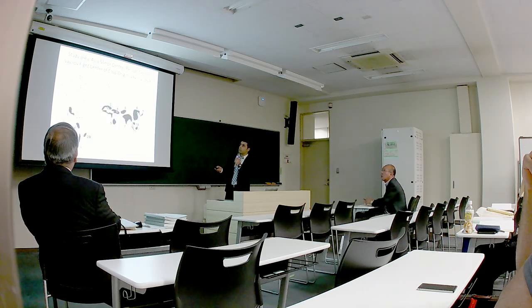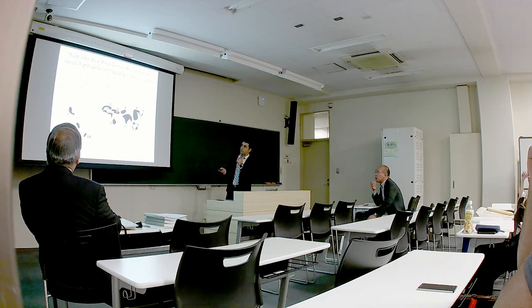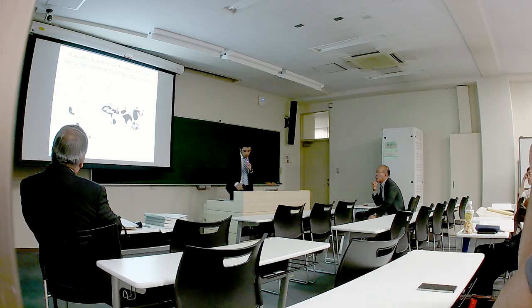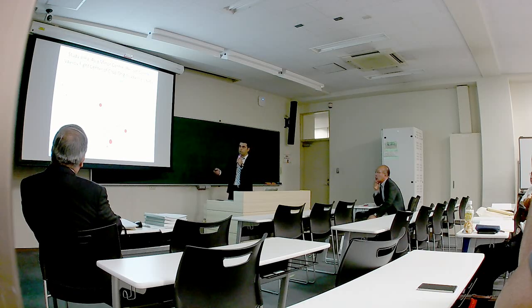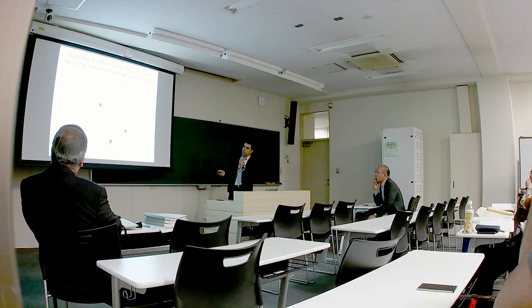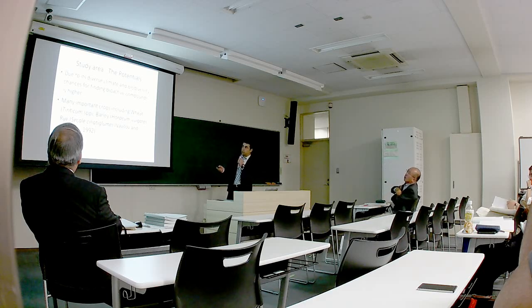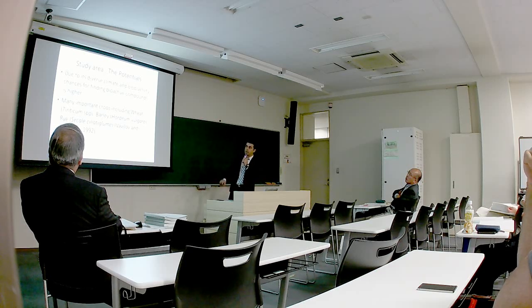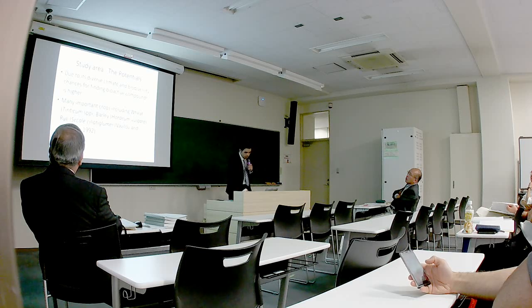The study area was based on the Vavilov 8 center of crop origin. Vavilov in 1926 divided the world to 8 major centers for crops, where each crop was domesticated or originated. Iran and two major study areas of this research happened to be in this place. We basically focused on three major areas: Caucasia mountains in the south part of Russia, northeast of Iran, and also one province in the west part of Iran, which has a mountainous climate. Due to the mass biodiversity in climate and species biodiversity, chances of finding allelopathically active compounds are higher. Many important crops including wheat, which is actually allelopathic, and also barley and rice originated from this area.